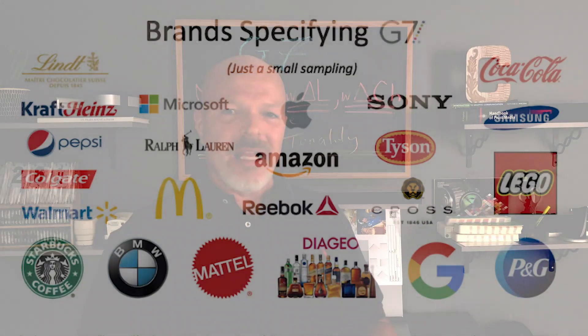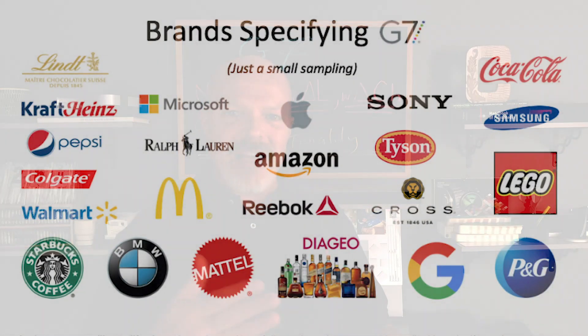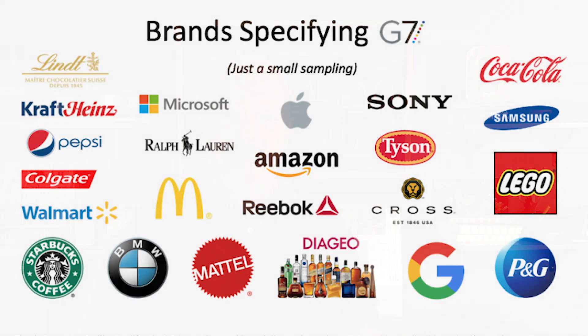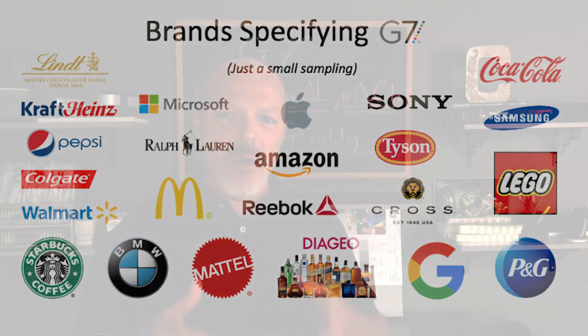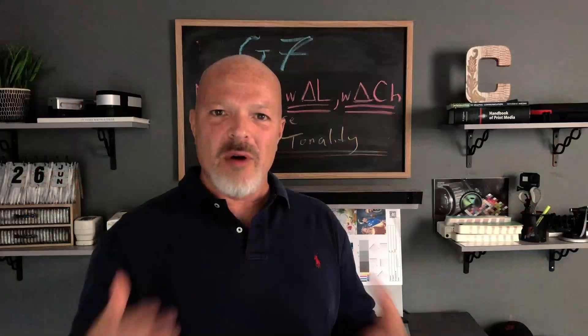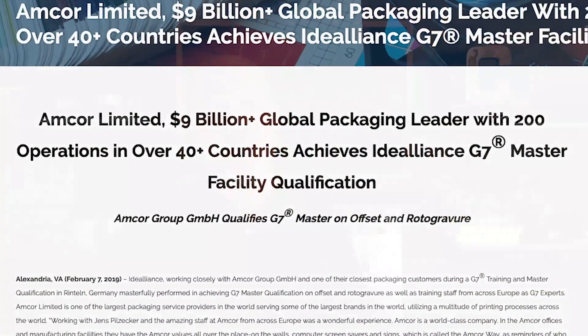G7 is also a print procurement or a print buying specification and standard for many of the world's leading brands and pre-media companies like Microsoft, Sony, SGS, or even Schawk, to name a few.